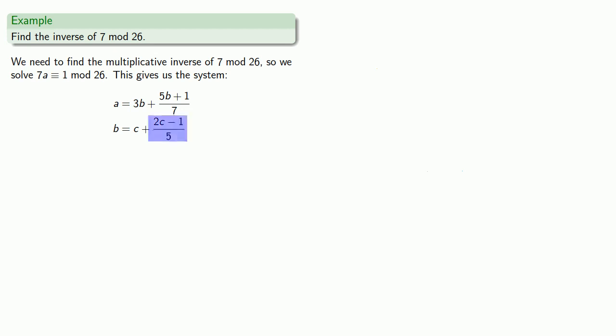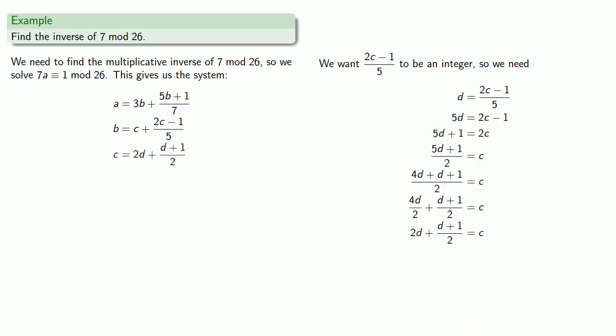We want (2c minus 1) over 5 to be an integer, and so we need some integer d to be equal to (2c minus 1) divided by 5. Applying our Diophantine method, we get c is equal to 2d plus (d plus 1) divided by 2.